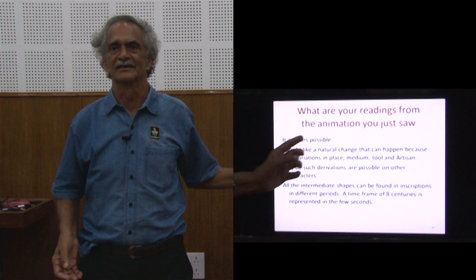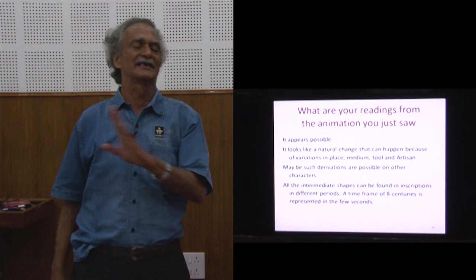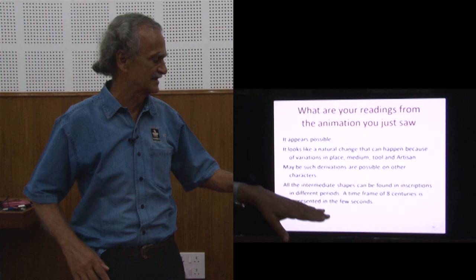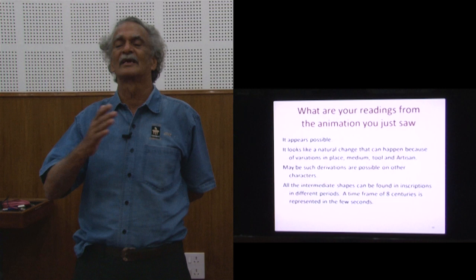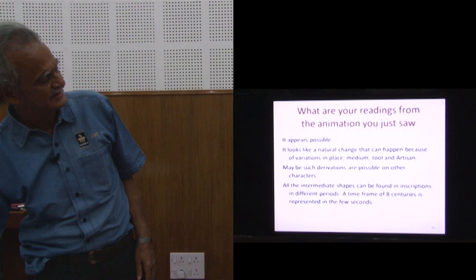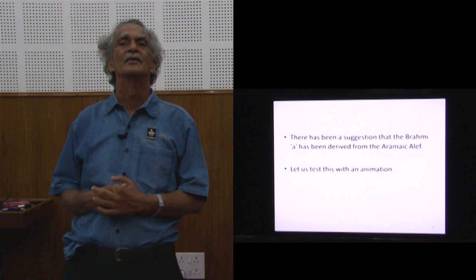But what we saw tells us a few things. It does not look like a bold jump — it is something understandable. The change appears natural, as if from one copying to the next, that kind of change might have happened. It is possible to derive a few other characters other than A by the same kind of technique. The last point is particularly important: all the intermediate steps seen, with the spacing of one second difference between them, are still findable — it is possible to find inscriptions with all those kinds of models. With this as our background, let us try to see another little example.